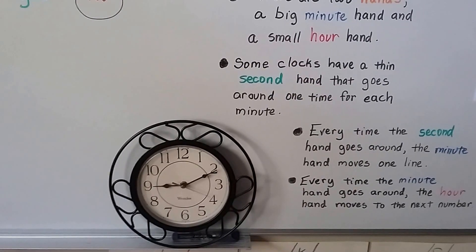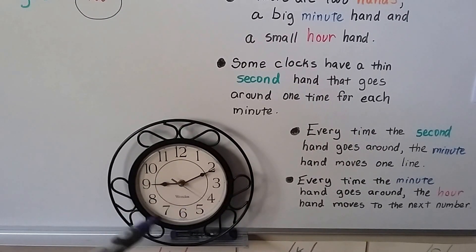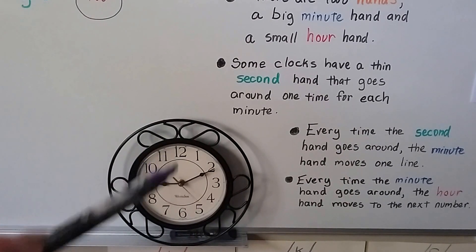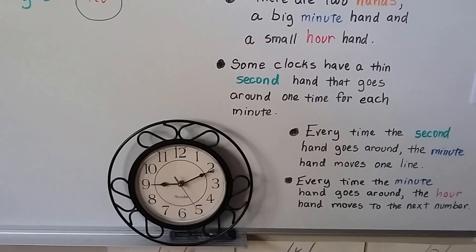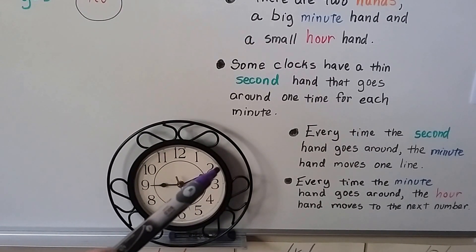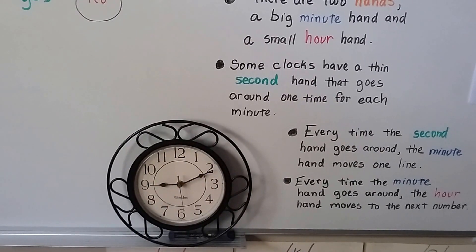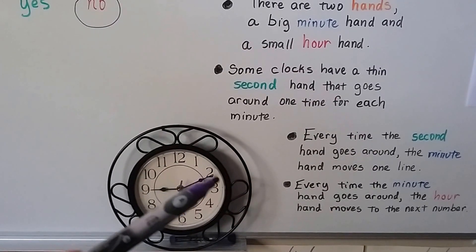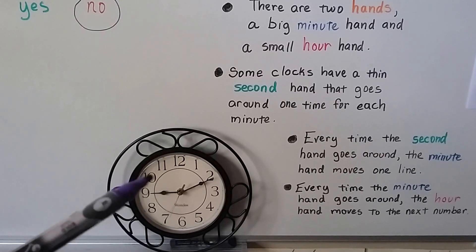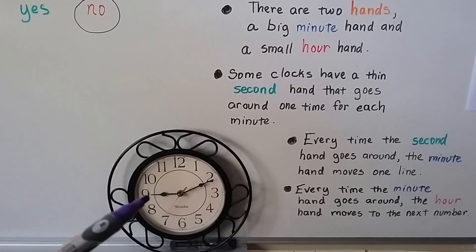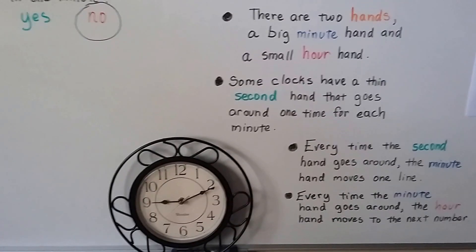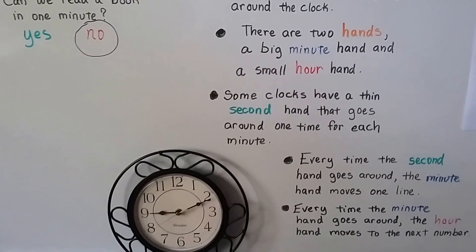So every time the second hand goes around one time, this minute hand moves one little tiny mark, one little line. Every time the minute hand goes around one time, the hour hand moves to the next number. We're going to talk about this a lot in this chapter.